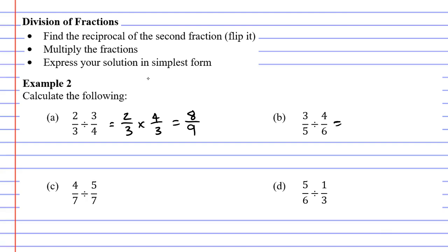Let's now move on to question B. Once again, the first fraction stays the same, 3 over 5. And the second fraction must be flipped. Instead of 4 over 6, it's now 6 over 4. And we change the divide to multiplication. What do we get this time? Well, 3 times 6 is 18, and 5 times 4 is 20.